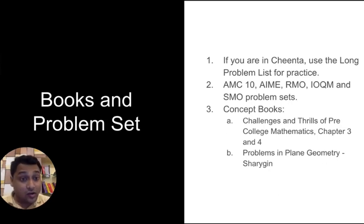The first one is the Challenges and Thrills of Pre-College Mathematics, Chapter 3 and 4 of it for Geometry. And then there is another book, a fantastic book by Sharygin, a Russian author, called Problems in Plane Geometry. You can find it in the internet, a PDF copy of it. Incidentally, Chenta is also hosting the Sharygin Geometrical Olympiad this year in India in collaboration with mathematicians from Moscow. So it is a fantastic opportunity for kids in India and for Chenta and everyone. You can check the link in the description to know more about Sharygin Geometrical Olympiad. All right, moving on.